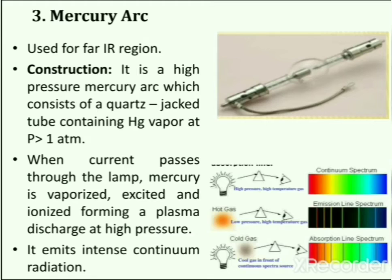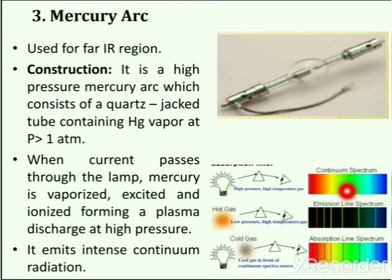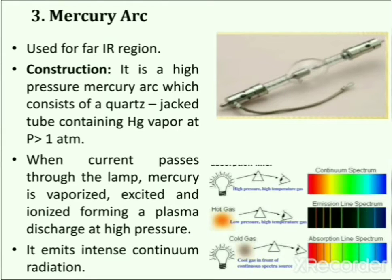Generally there are three types of radiation spectra: first is the continuum spectrum, second is the emission line spectrum, and third is the absorption line spectrum. A spectral continuum occurs when the interaction of a large number of atoms, ions, or molecules spreads out all the discrete emission lines of an object so they can no longer be distinguished.